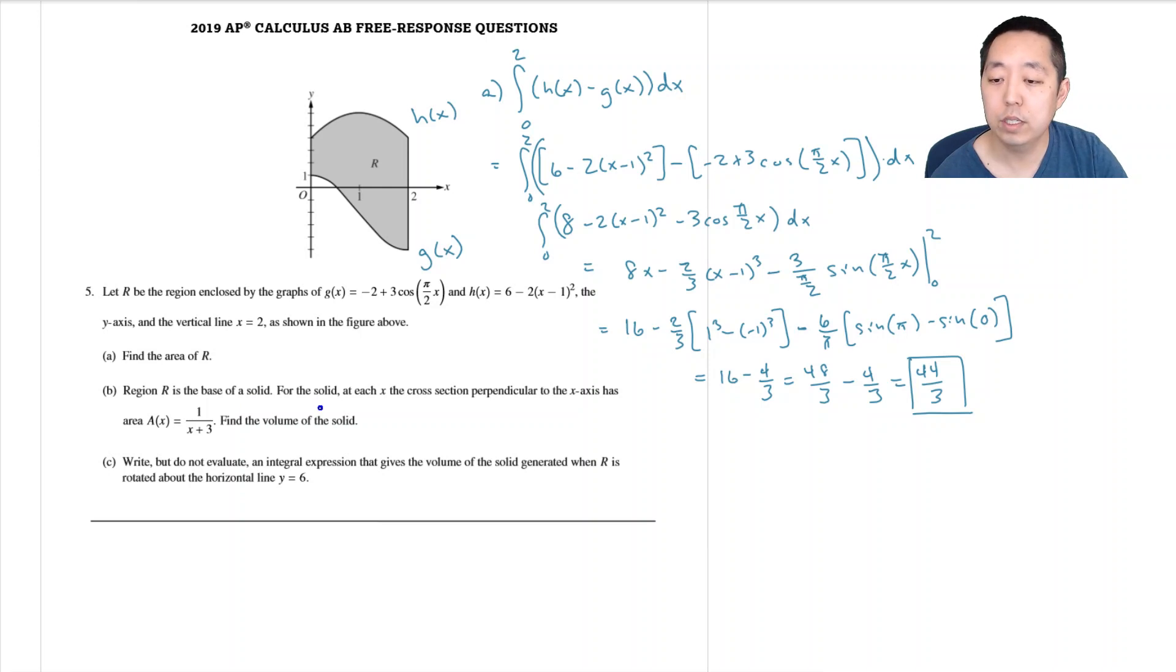Region R is the base of a solid. For each solid, a cross-section perpendicular to the x-axis has an area of 1 over x plus 3. Find the volume of the solid.